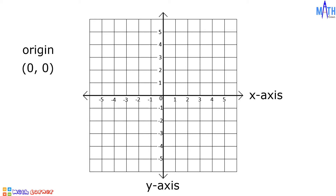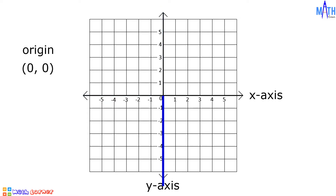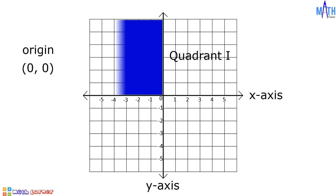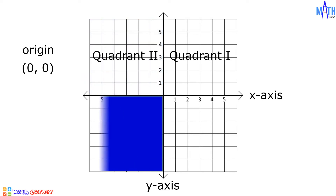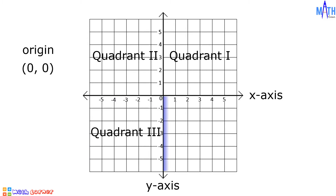From the origin, moving to the right is positive, moving to the left is negative, moving upward is positive, and moving downward is negative. The Cartesian plane is divided into four quadrants: the first quadrant, the second quadrant, the third quadrant, and the fourth quadrant.